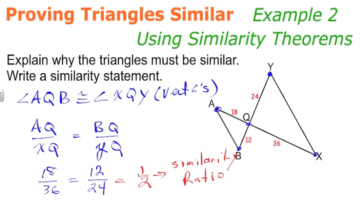So that would be one way to justify that these sides are proportional. Set up the proportion, and then here we have an extended proportion, three or more ratios that are equal. 18/36 is equal to 12/24, which is equal to 1/2.